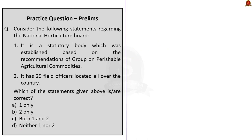The next question is about the National Horticulture Board. Statement 1: it is a statutory body established based on the recommendations of the group on perishable agricultural commodities. Even though the second half is correct, the first half is incorrect — it is not a statutory body. It is registered as a society under the Societies Registration Act, not established by any law. Statement 2: NHB has 29 field offices located all over the country. This statement is correct. So the correct answer is option B — only statement 2 is correct.